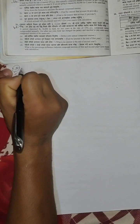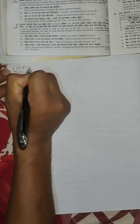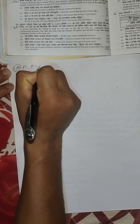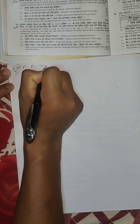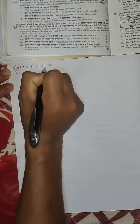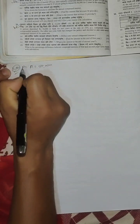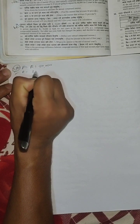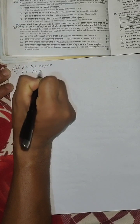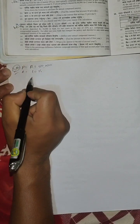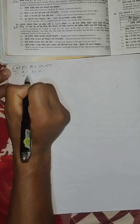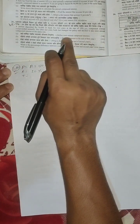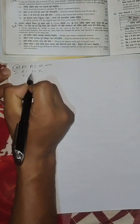Now we will see the P value. P equals Rs. 50,000. This is the rate — R is equal to 10%. This is the time — Time is equal to 2 years.